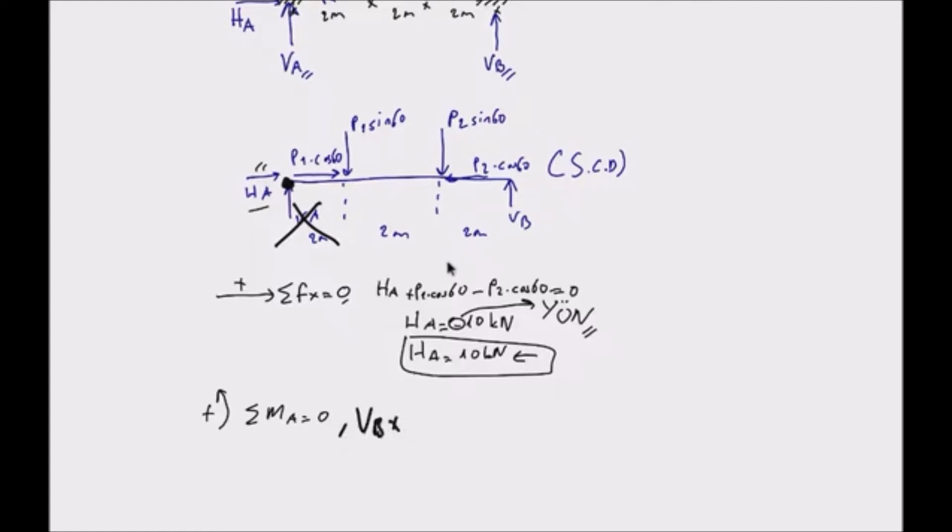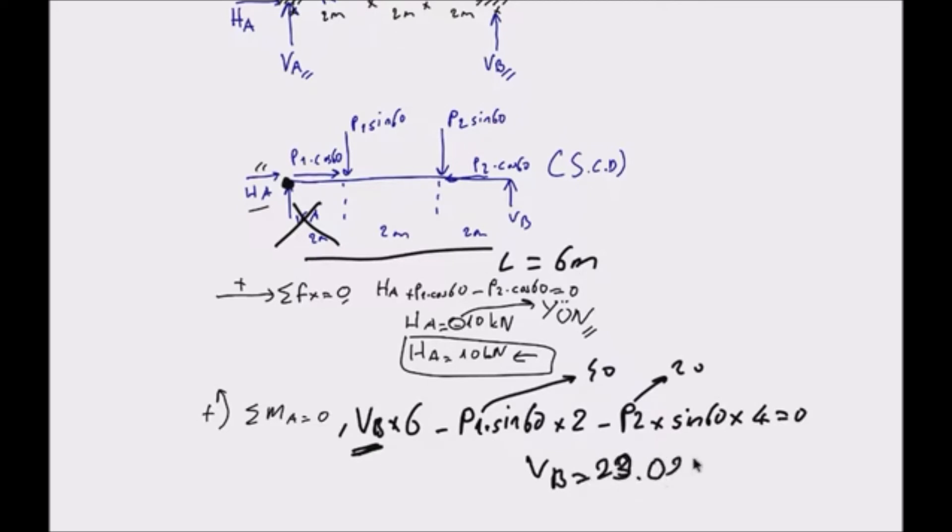VB times 6 minus P1 times sin 60 times 2 minus P2 times sin 60 times 4 is zero. We know these P1 and P2 forces from the question. When we write into the equations, VB is 23.09 kN.